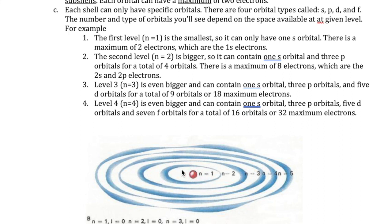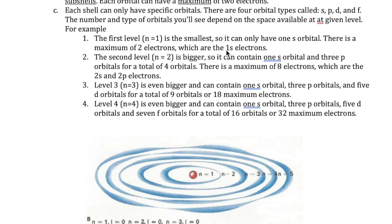The first level, or the n equals 1 level, is the closest one to the nucleus. It has a very limited volume and can only have one S orbital in it. Since each orbital can have at most two electrons, level one can only have two electrons and no more. Electrons in this orbital are called the 1S electrons — '1' because it's in level one, 'S' because it is in an S orbital.